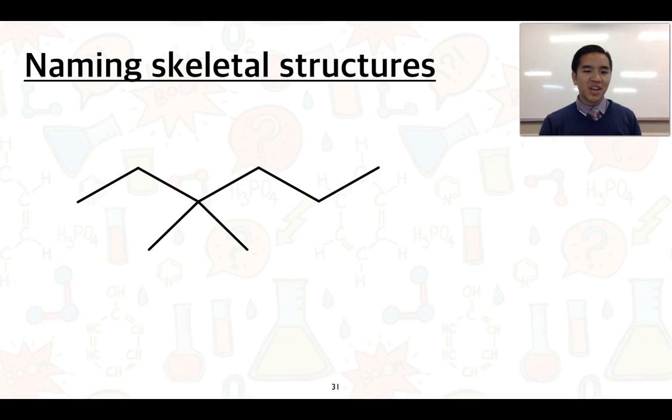Work out the longest chain of carbon atoms. So that'll be 1, 2, 3, 4, 5, 6. So six carbon atoms, the parent chain is called a hexane.